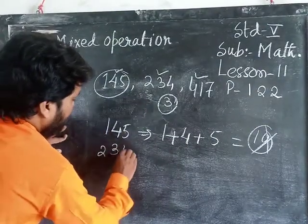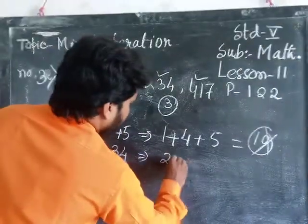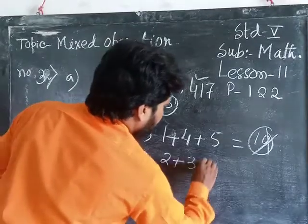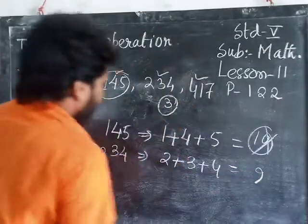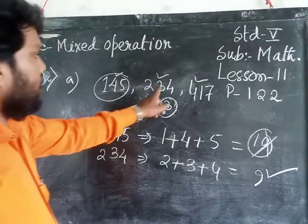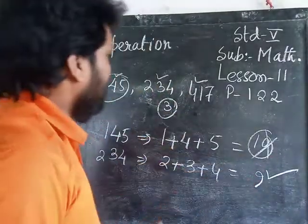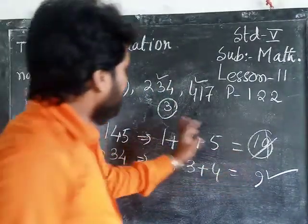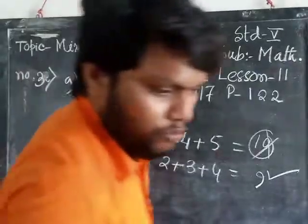Next, 234. What is the process? Sum of the digits: 9. 9 is divisible by 3, so 234 is divisible by 9. There are so many examples.